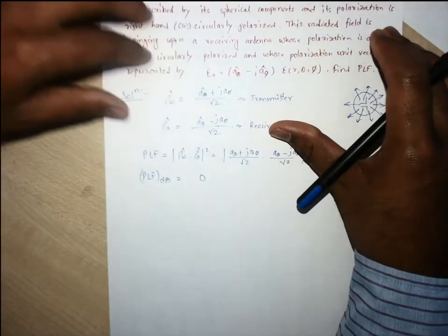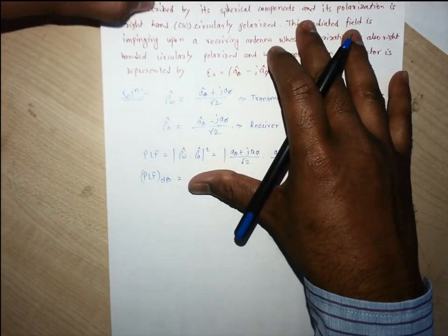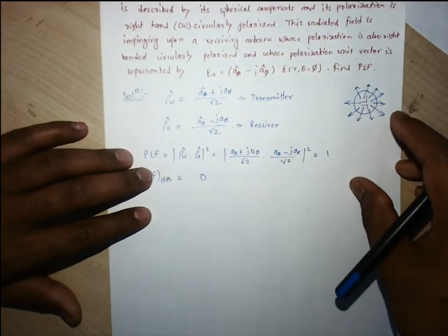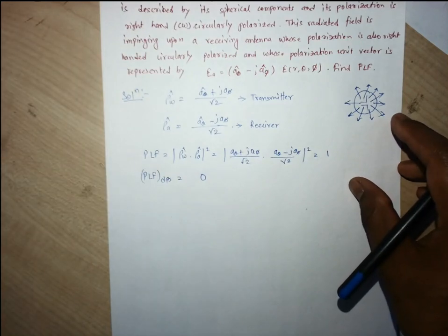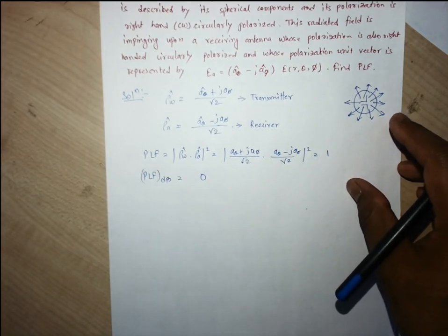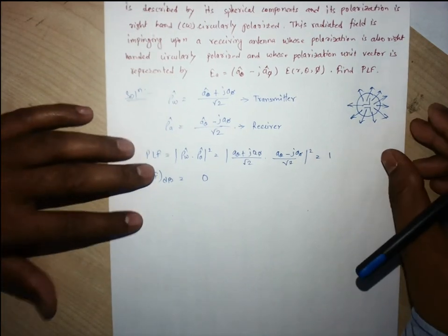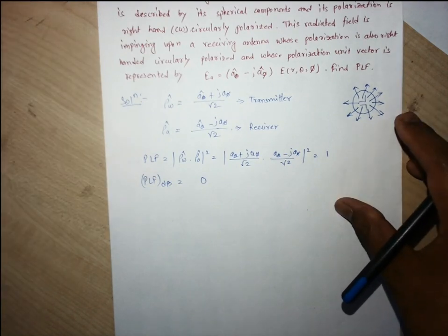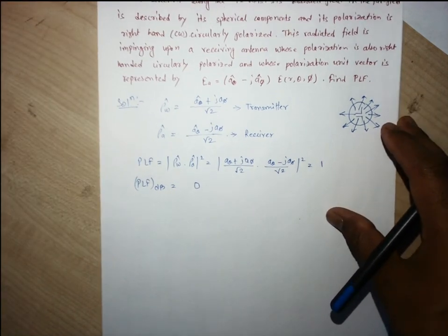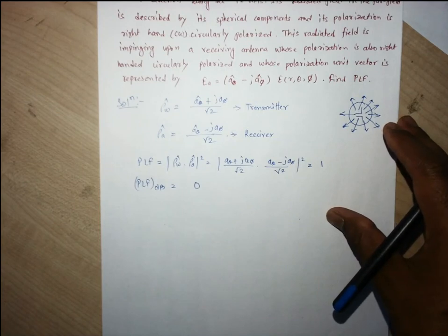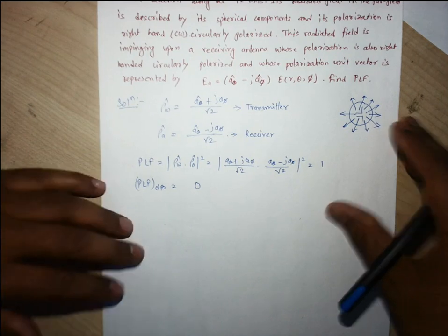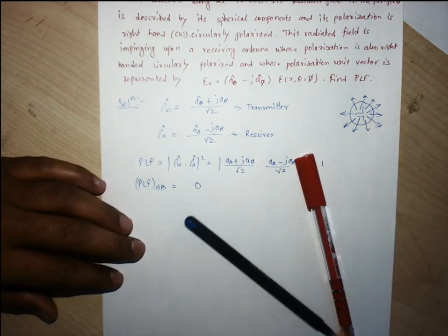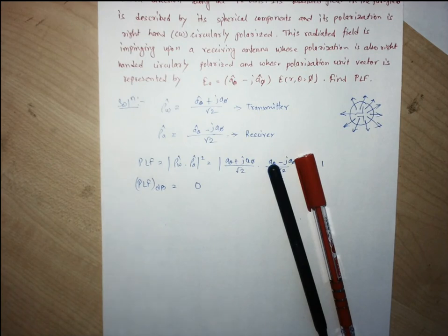When solving these problems, you need to carefully determine the polarization unit vector for each case — whether it is for the transmitter or the receiver — and account for the direction of propagation, as this affects the sign of the phase. Any doubt on this can be clarified.